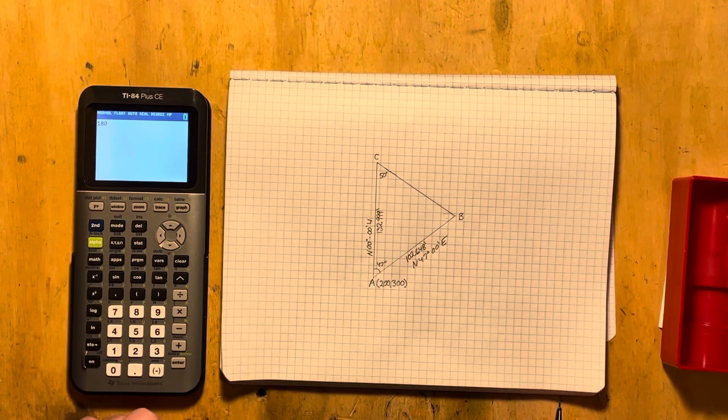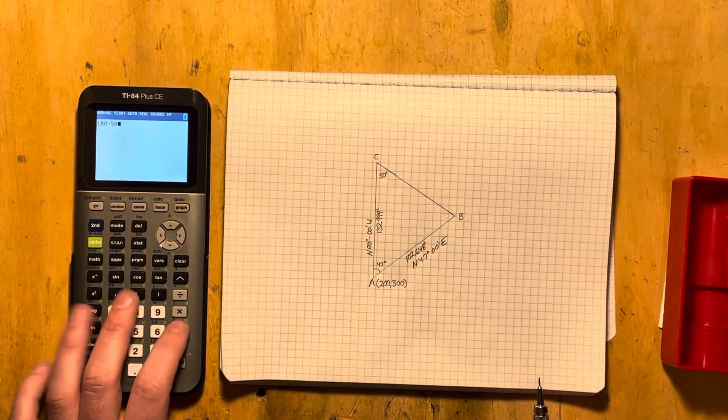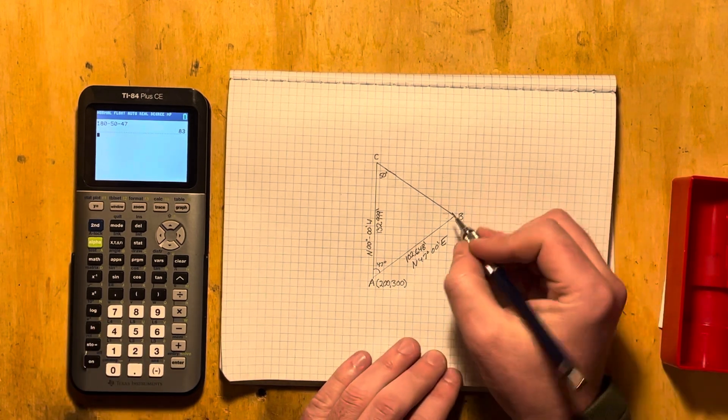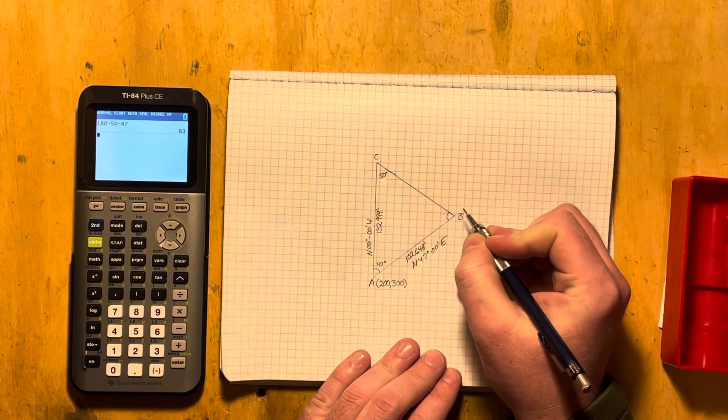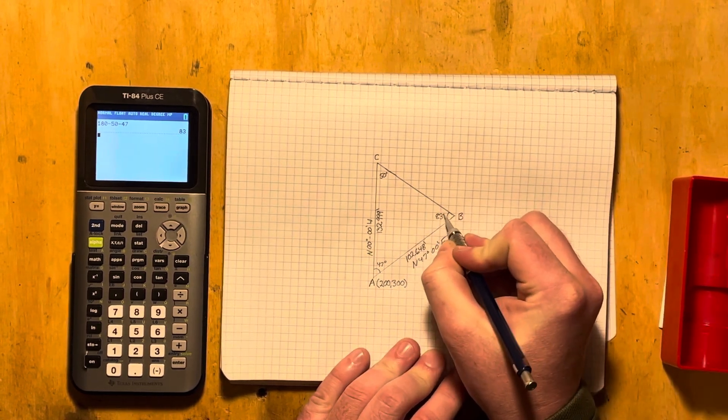We know there's 180 degrees in a triangle and we already have two of the angles. So 180 minus 50, minus 47. We find that the angle at B is 83 degrees.